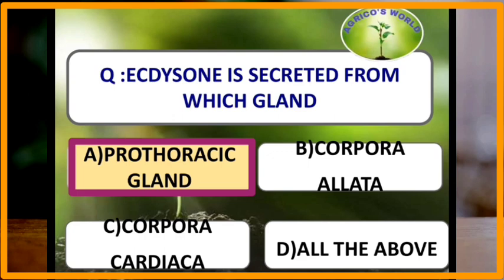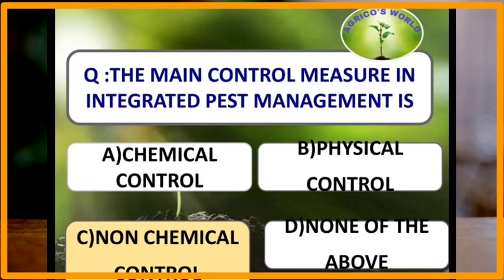Ecdysone is secreted from the prothoracic gland, and the juvenile hormone is secreted from corpora allata. The main control measure in integrated pest management is non-chemical control. The main aim of IPM is non-chemical control.